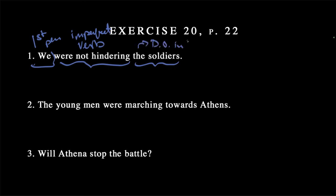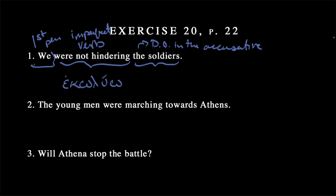We have a direct object, and this will be in the accusative because the verb "hinder" takes an accusative — it's a material verb with real-world physical application. So let's start with the verb. "Hinder" comes from koluō. We need to put this in the past tense, so we remember to put on our past indicative augment, the unaspirated epsilon. Then we make this first person plural by adding the thematic ending -omen. So ekolúomen — "we were hindering."